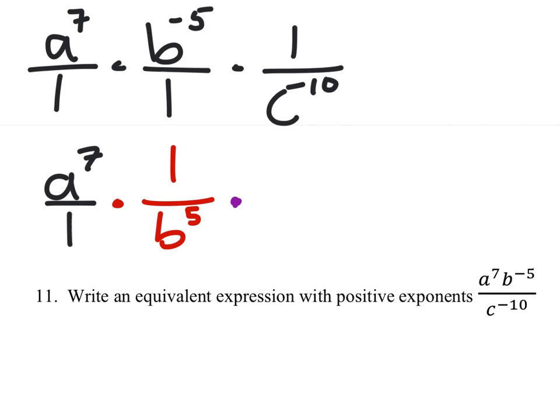But we don't just reciprocate that one, we've got to reciprocate these as well since c to the power of negative 10 has a negative exponent. So that's c to the power of 10 over 1 now.